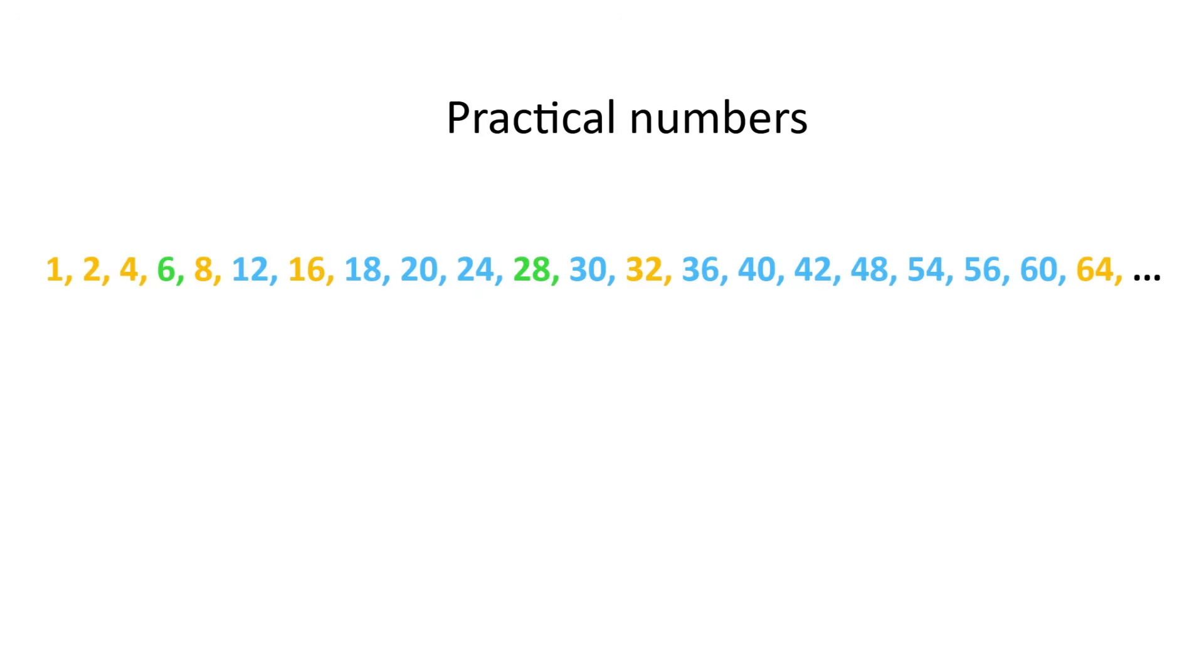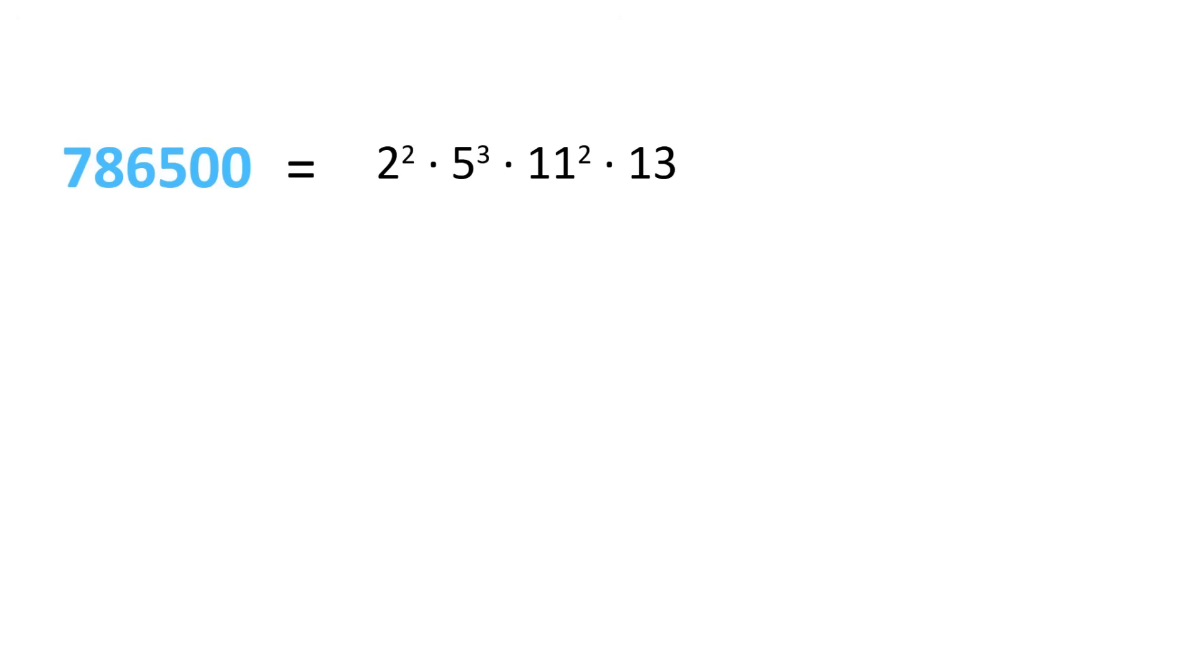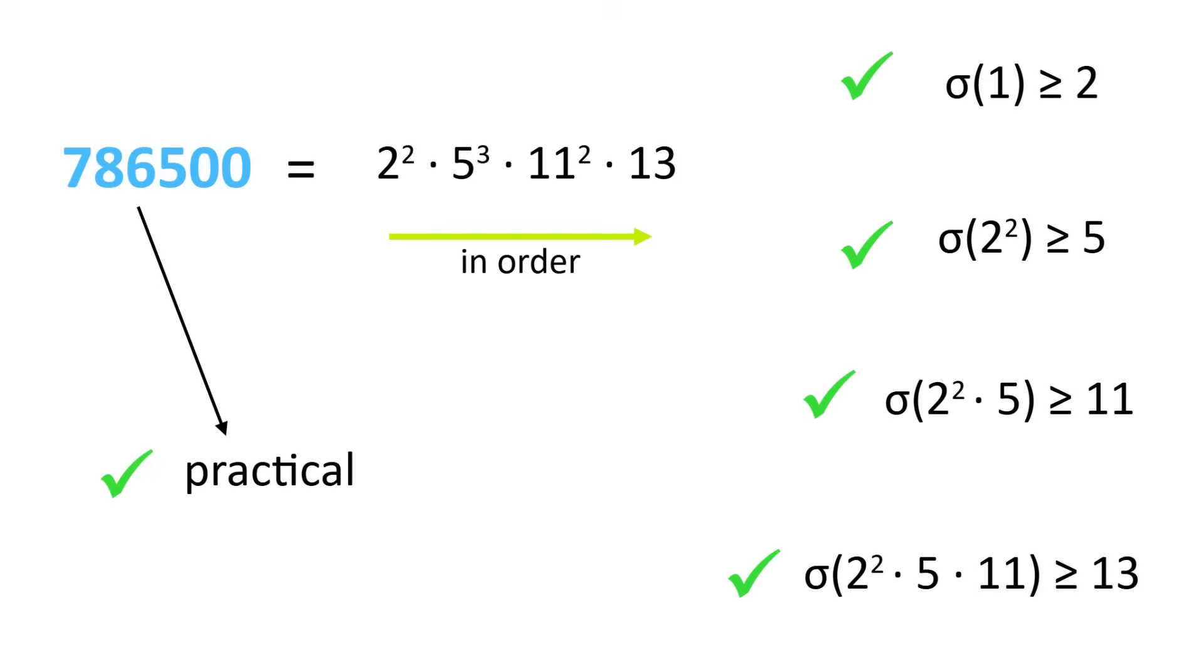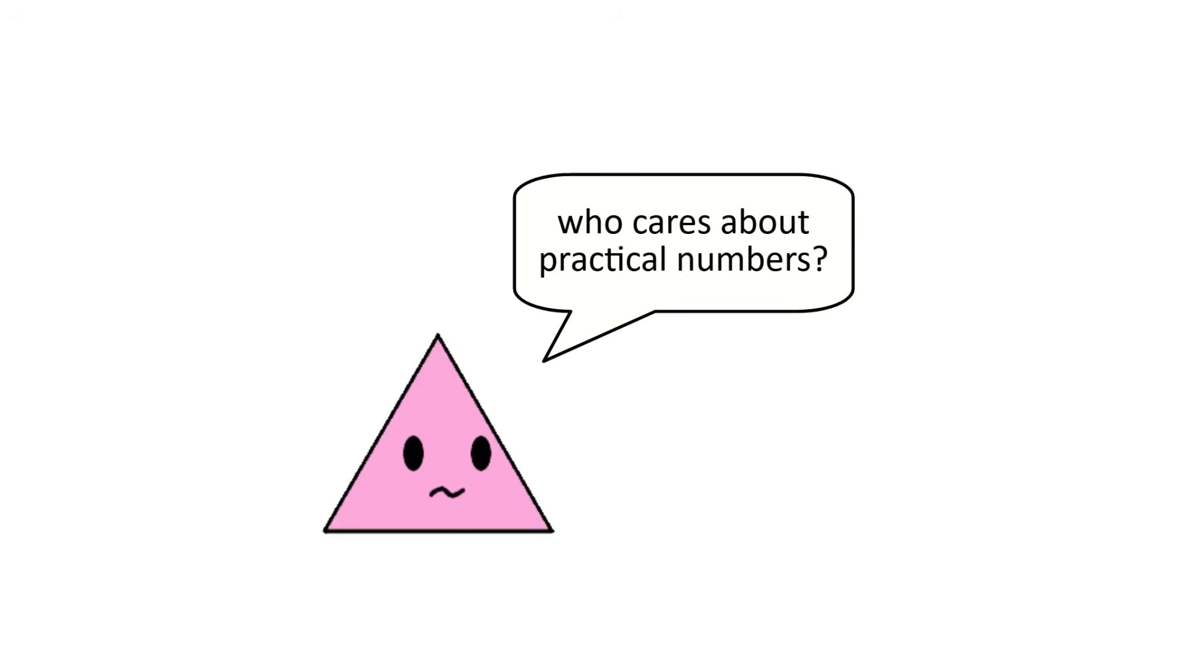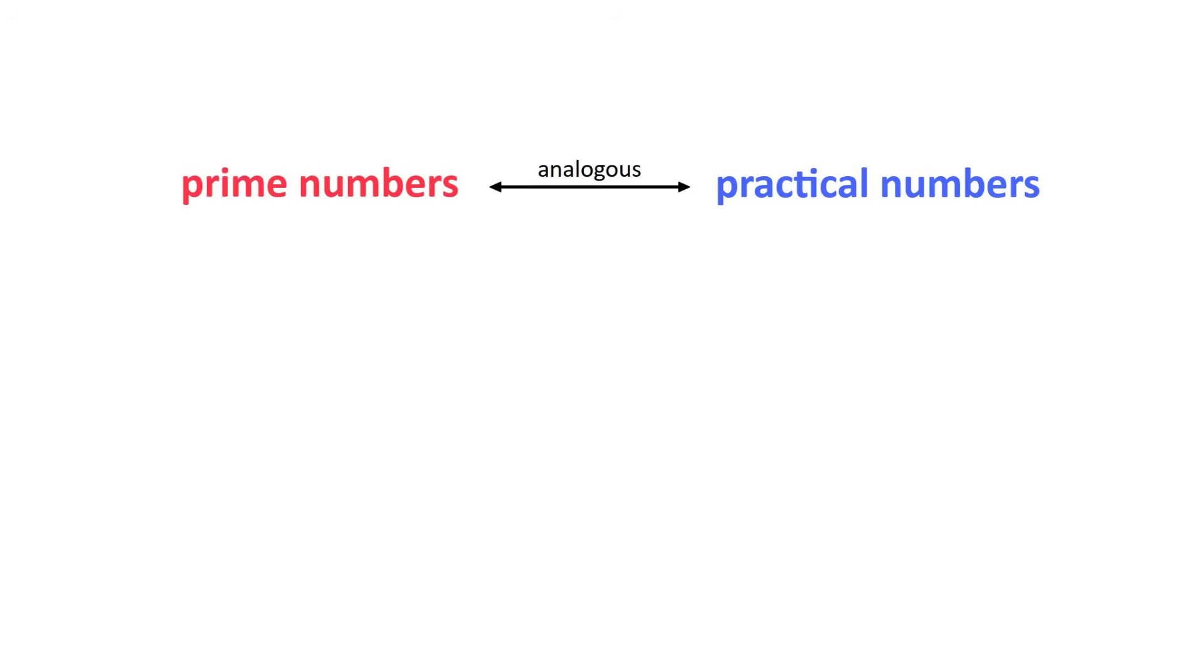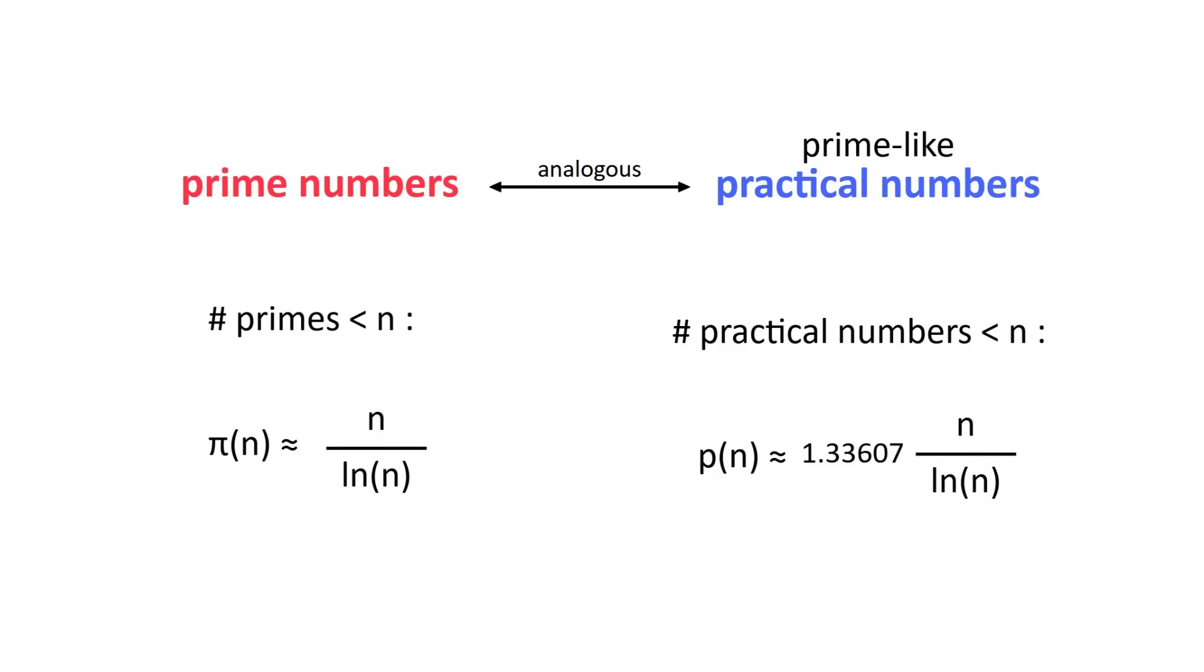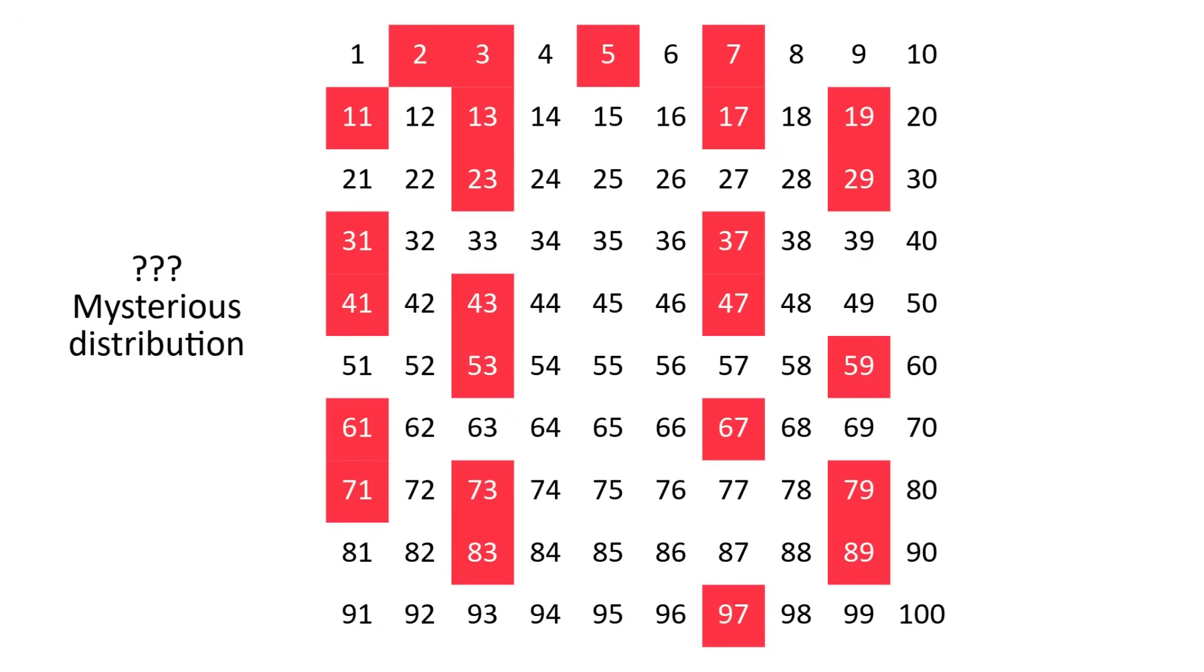It's actually possible to tell if a number is practical just from its prime factorization. If the prime factors are in order, then each new prime must be less than or equal to the sigma of everything before it. Practical numbers might seem like a pretty random thing to care about, but there are actually lots of interesting ways in which they're analogous to primes. The density of prime numbers decreases as you go, and the number of primes less than n is about n over natural log of n. Practical numbers are a bit more common, but they have the same asymptotic distribution. The distribution of prime numbers is one of the biggest mysteries in all of math, and it relates to the most famous unsolved problems.